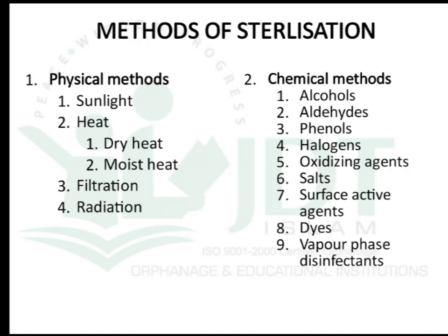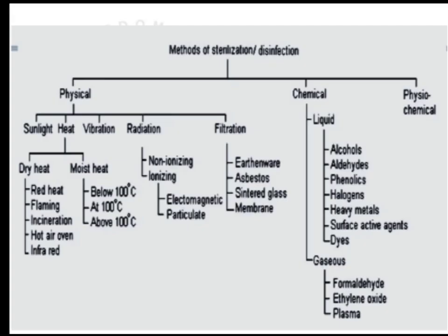The methods of sterilization are mainly divided into physical methods and chemical methods. Physical methods include sunlight, heat, filtration, and radiation; chemical methods use different chemicals, which will be discussed under disinfection. There is also a physicochemical category combining both approaches. Heat is further divided into dry heat and moist heat.